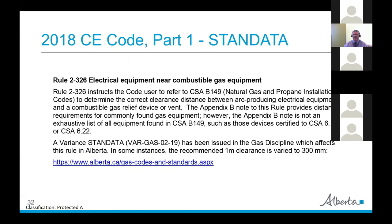Another stand data for Part 1 recognizes what's going on in the gas discipline. Rule 2-326 refers to CSA B149, the Natural Gas and Propane Installation Code. There's been a variance issued under the gas discipline which affects that rule in Alberta — in some instances the recommended one-metre clearance is varied to 300 millimetres. We make reference to CSA B149 but also let people know there's a variance on that, so check with your gas SCO.